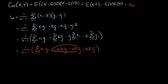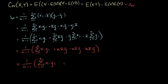We notice that those two terms cancel out. We're left with 1 over n minus 1 times the sum from i equals 1 to n of xi·yi, minus n times x-bar times y-bar outside the sum. This is very similar to the expression we had before — we've just replaced the second xi with yi, and replaced the second x-bar with y-bar.